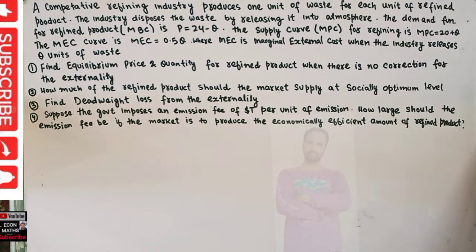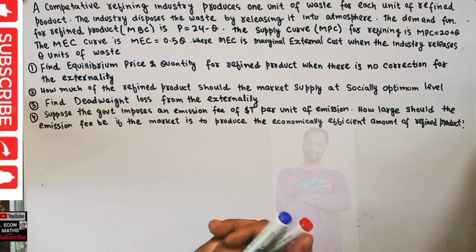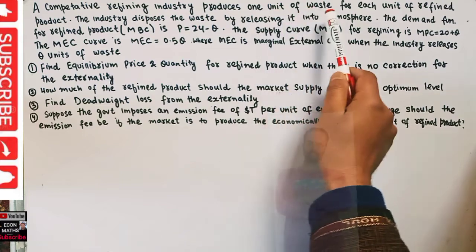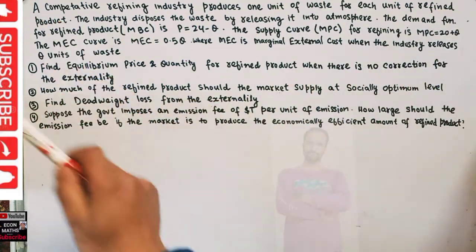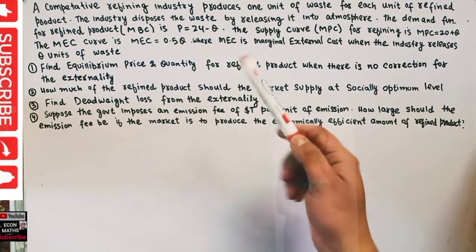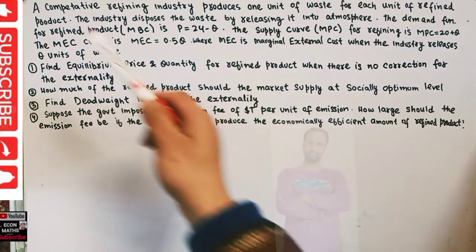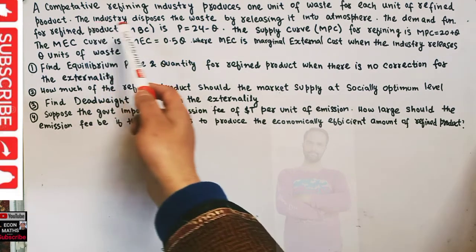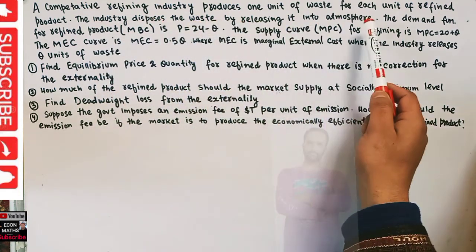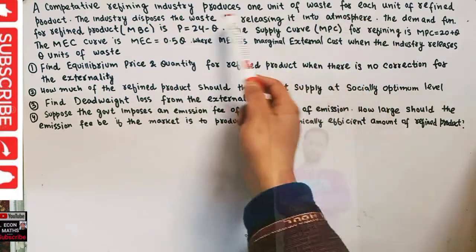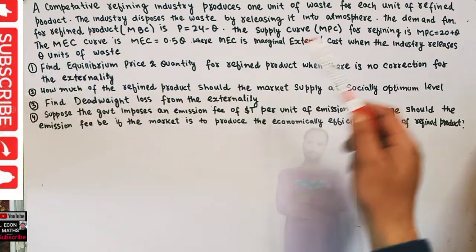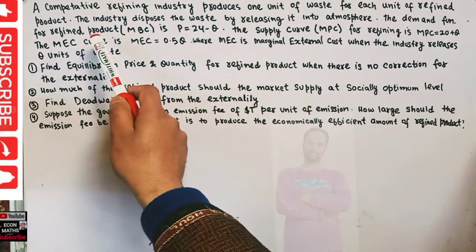In this video we will try to solve a problem on how to find the socially optimal output in case of externality. The question is: a competitive refining industry produces one unit of waste for each unit of refined product. This competitive industry produces a product and with that it also produces a unit of waste. The industry disposes the waste by releasing it into the atmosphere, which causes damage to the atmosphere.